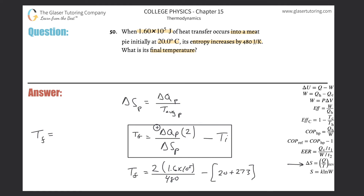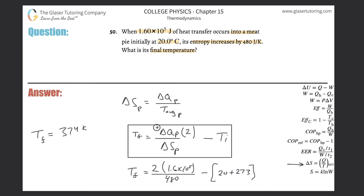Calculating: 2 multiplied by 1.6 times 10 to the fifth, divided by 480, then subtract 20 plus 273. The final Kelvin temperature comes out to approximately 373 to 374 Kelvin. If you need that in Celsius, subtract 273, and you get about 101 degrees Celsius — roughly 100 degrees Celsius.